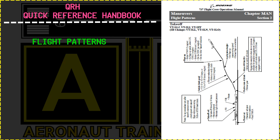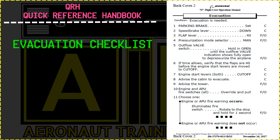The next chapter contains profiles of the flight patterns like takeoff, different types of approaches such as ILS and VOR, the traffic pattern, and the go-around and missed approach profile. And most importantly, at the back of the QRH, an evacuation checklist is given — which is not a memory item, it is a read-and-do checklist.